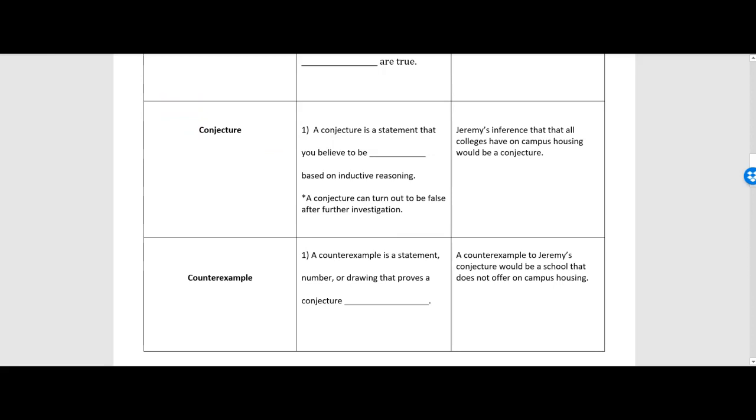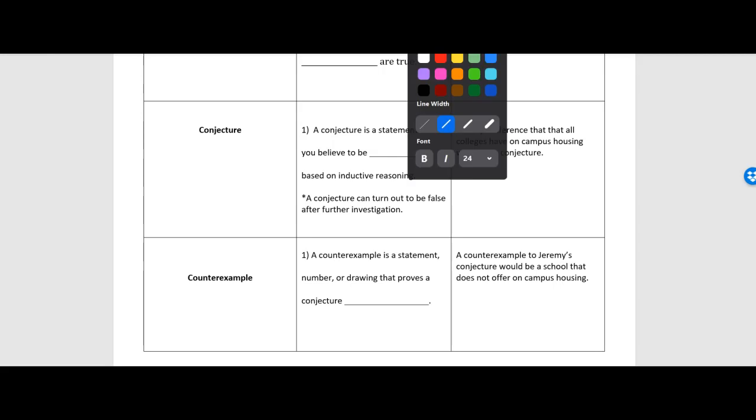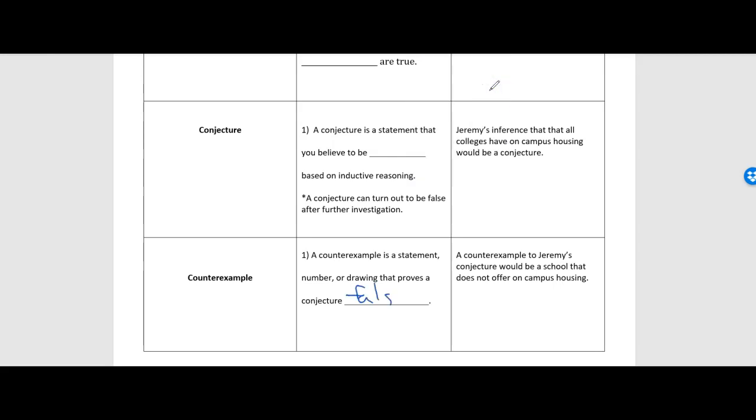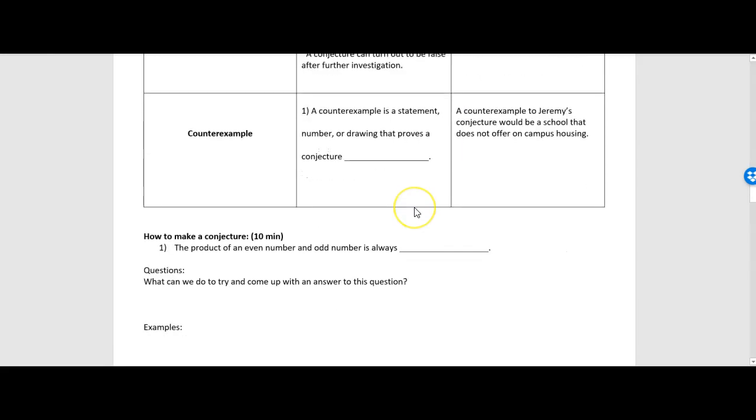And we have a counterexample. Now a counterexample is a statement, number, or drawing that proves a conjecture false. So we can think back to Jeremy's example. He thought that all colleges provide on-campus housing. Well, a counterexample to his statement would be a school that doesn't have on-campus housing. Maybe he visits, or maybe he hears about an online school that is completely virtual, and they don't have anywhere for students to stay on campus because they don't have a campus. Well, that would be a counterexample to Jeremy's initial conjecture. All right, let's move on.